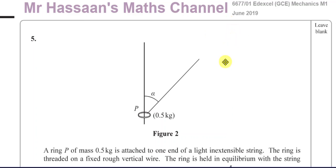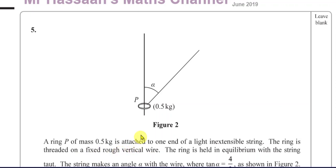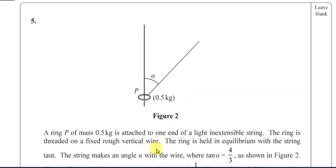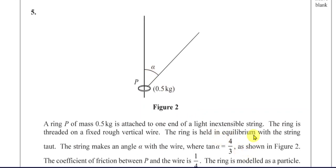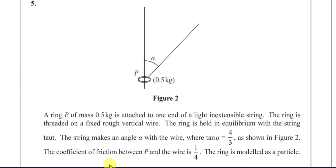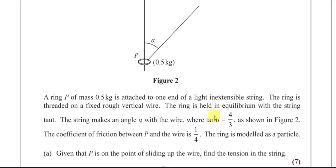This question is about a ring of mass 0.5 kilograms attached to one end of a light and inextensible string. The ring is threaded on a fixed rough vertical wire, so there is friction involved. The ring is held in equilibrium with the string taut, making an angle alpha with the wire where tan(alpha) = 4/3. The coefficient of friction between the ring and the wire is one quarter. Given that the ring is on the point of sliding up the wire, find the tension in the string.